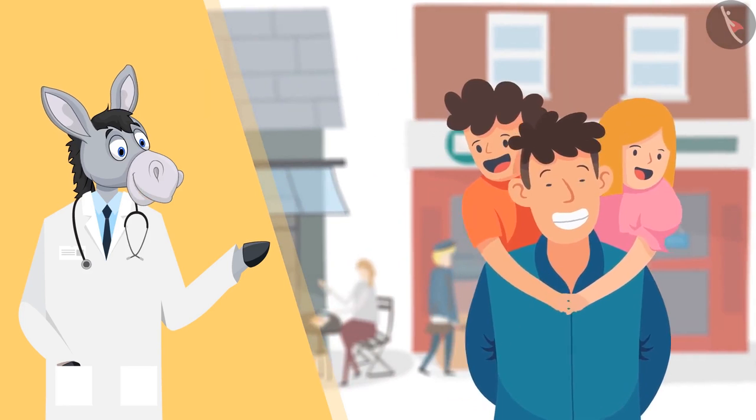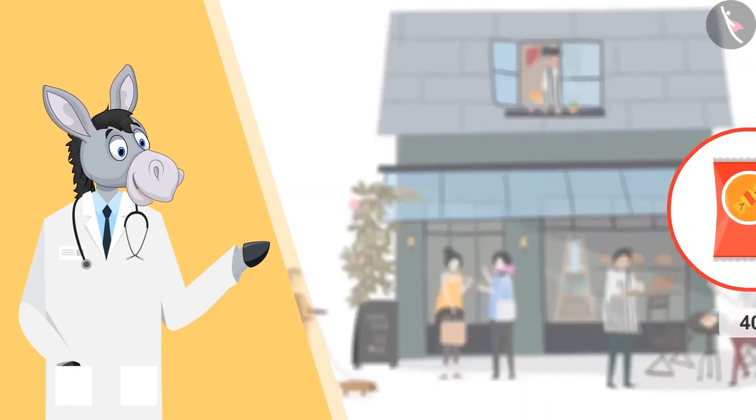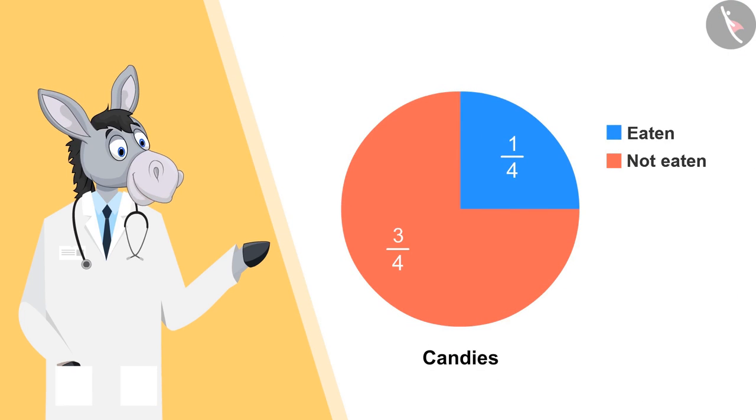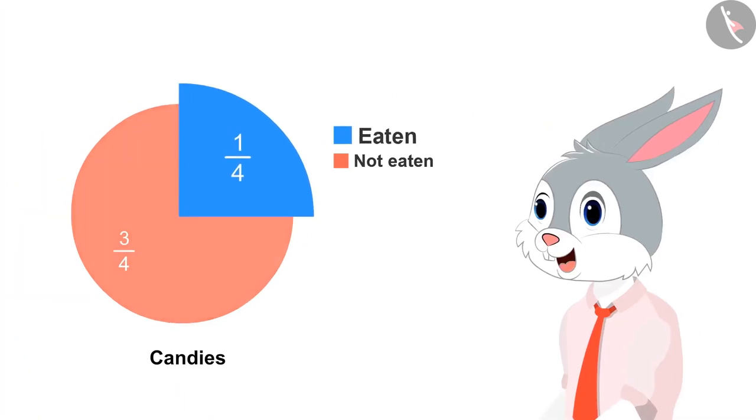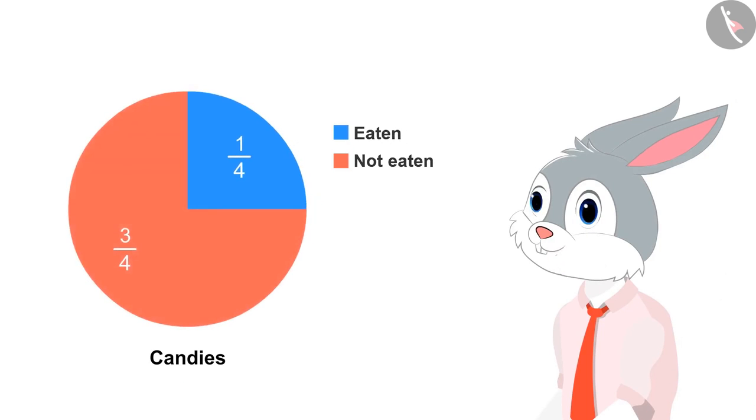Father of Bhimla and Chandu has bought a packet of candy. It contains forty candies. Now, look at this pie chart to find out how many candies have been eaten by the kids. They ate one by four, that is one-fourth of the candies. So, one-fourth of forty is ten. So, children ate ten candies.